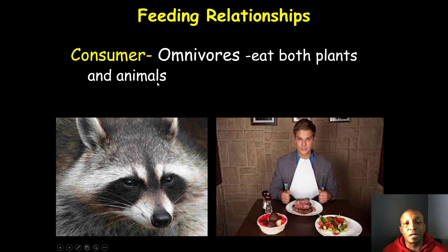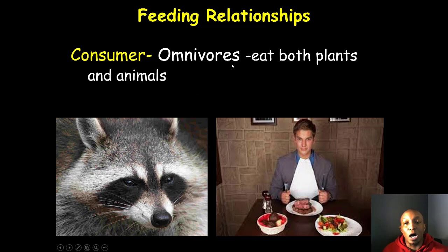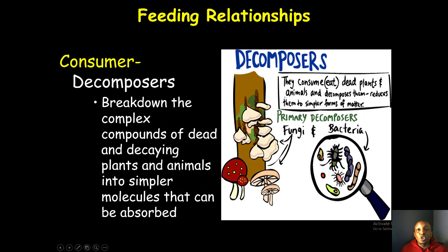Another type of consumer is the omnivore. Omnivores eat both plants and animals. For example, this raccoon and this man — notice he has a potato, a steak, and a salad — are feeding on both plants and animals, so both would be considered omnivores.